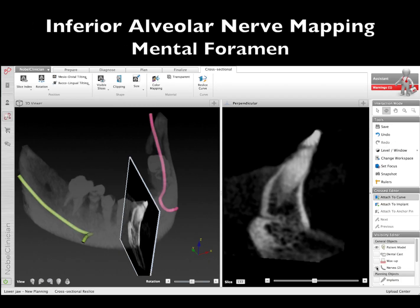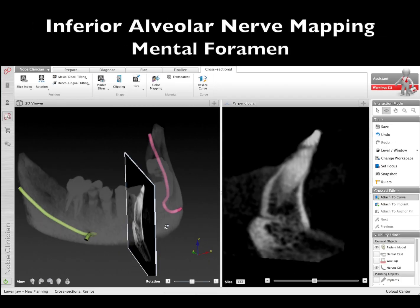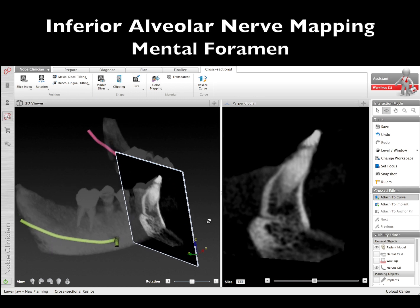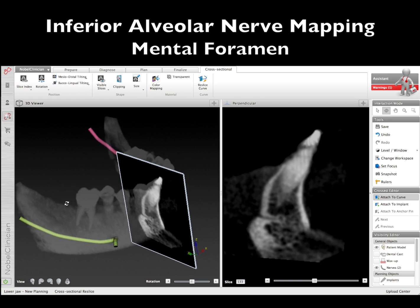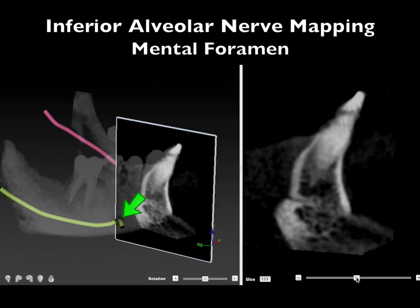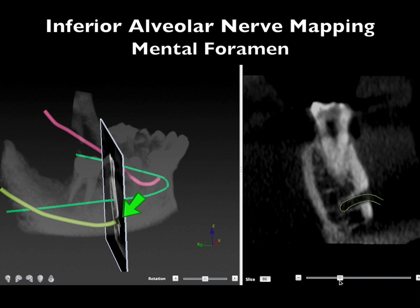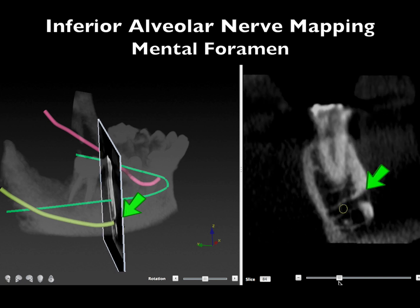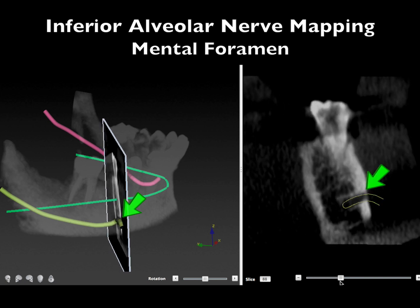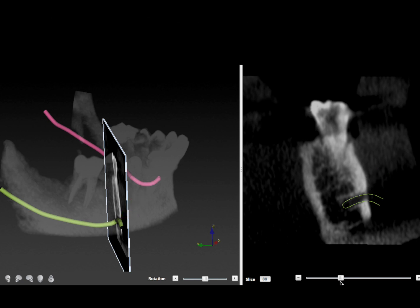The first thing we do is to map out the nerve. We can see the mental foramen very well. We want to isolate this nerve and map it out prior to implant placement so we can see where it is. This is our number one structure that we want to stay away from.